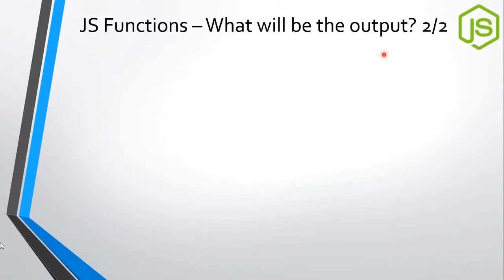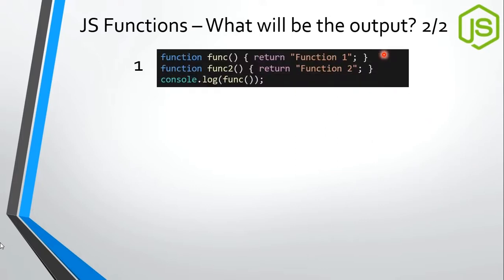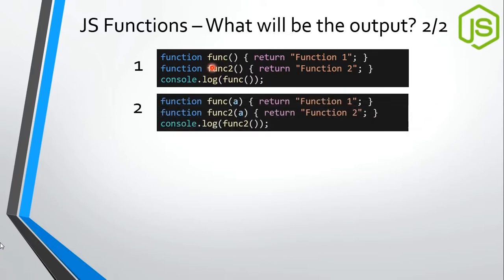Now that we understand JavaScript function behavior, we can tell the output of code snippets. If there are two different function names — func and func2 — calling func calls 'function one' because they have different names. Calling func2 with no argument is valid in JavaScript even though it's declared with one argument, because JavaScript looks for the function name, finds it, and calls it even with no argument. When called with two matching arguments, a gets 5 and b gets 10.